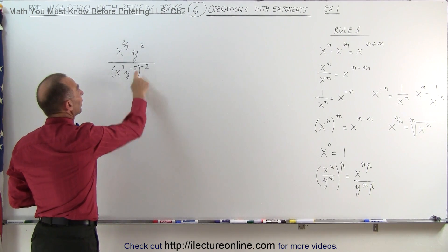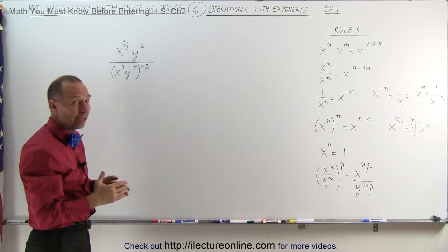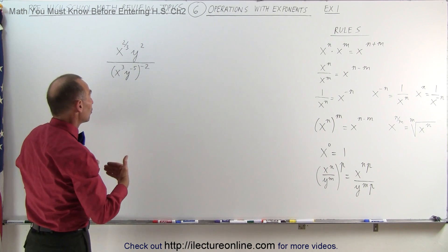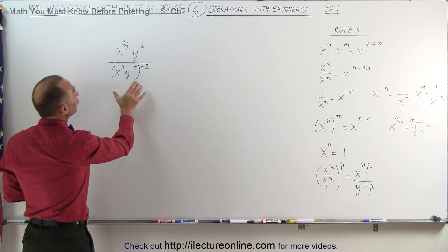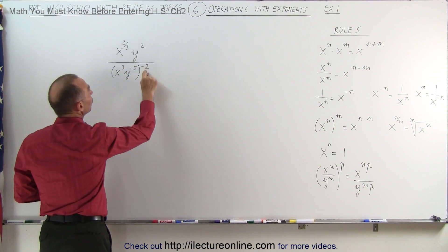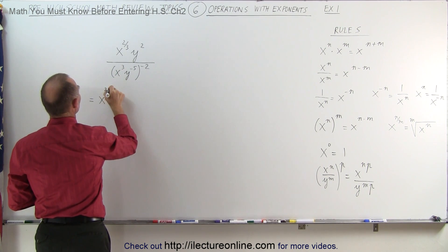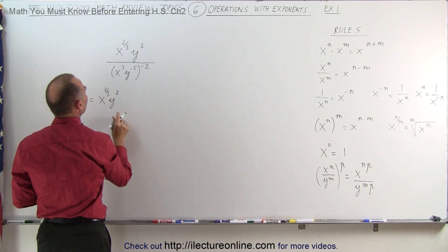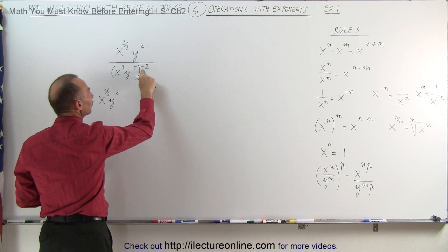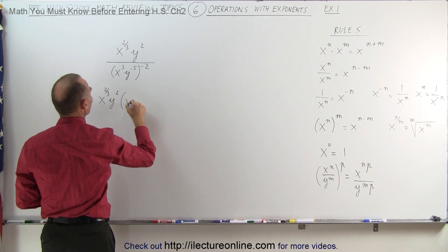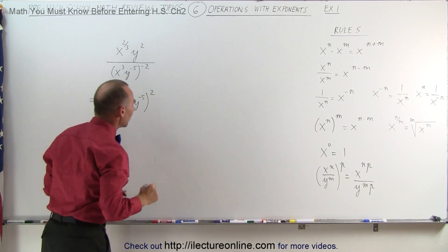Notice in the denominator I have a negative 2 exponent. It turns out there are many ways to get to the correct answer, so I'll do this in two different ways to show you that you can reach the same answer applying the rules in a different order. First, I'm going to move this to the numerator to turn it into a positive exponent. So this becomes x to the two-thirds, y to the second power — those stay the same — but this now goes to the numerator, changing the negative 2 to a positive 2 exponent. So this becomes x cubed, y to the minus 5 power, raised to the positive 2 power.